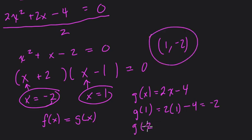The other is at g of negative 2. So we have 2 times negative 2 minus 4. Negative 4, excuse me, minus 4 is negative 8. So the other meeting point is negative 2, negative 8.